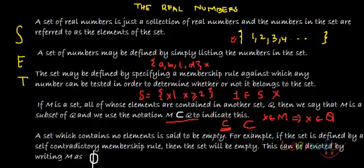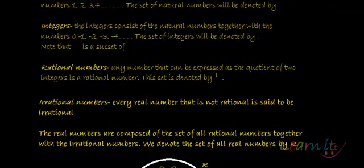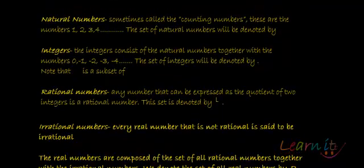A set which contains no element, or is empty — a set which does not contain anything — is called phi (∅), also known as a null set. It is a null set because it does not contain any element. We will soon see why we require phi at times.